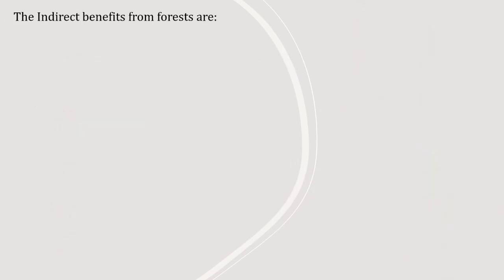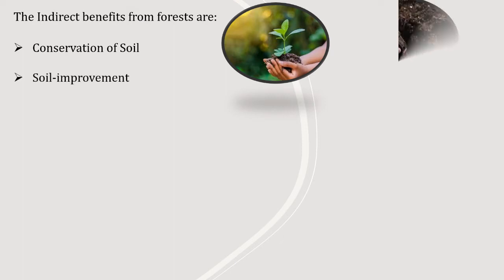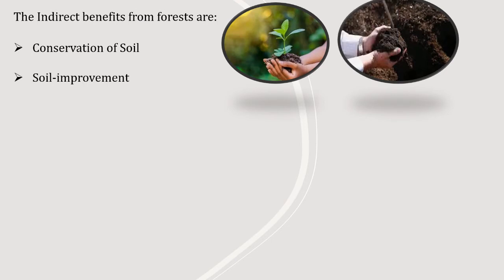The indirect benefits from forest include conservation of soil. Forest prevents soil erosion by binding the soil with the network of roots of different plants and reduces the velocity of wind and rain, which are the chief agents causing erosion. Soil improvement: the fertility of the soil increases due to humus, which is formed by the decay of the forest litter. Forests also reduce atmospheric pollution by using up carbon dioxide and giving off oxygen during the process of photosynthesis.